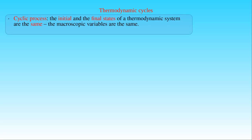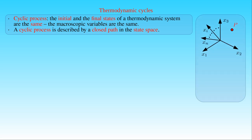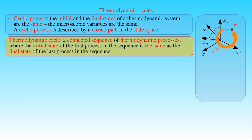We have seen that processes undergoing in thermodynamic systems can be represented by paths connecting the initial and the final states of the system in the state space. There is a special case of thermodynamic processes where the initial and the final states of the system are the same. A process that eventually returns a system to its initial state is called a cyclic process. In the end of the process, all the state variables, that is the macroscopic properties of the system, have the same value which they had in the initial state. As a result, the path of a cyclic process is a closed path in the state space. The concept of cyclic process can be generalized to a connected sequence of thermodynamic processes, where the initial state of the first process in the sequence is the same as the final state of the last process in the sequence. Such a sequence of thermodynamic processes is known as a thermodynamic cycle.